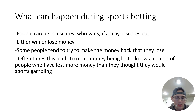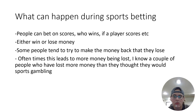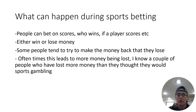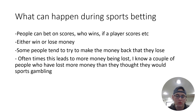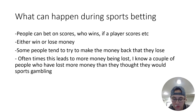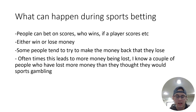So what can happen during sports betting? People can bet on scores, who wins, who loses, if a player scores. If you're watching baseball, you can bet on if somebody's going to hit a home run. If it's hockey, you can bet on who scores and how many goals are going to be scored in a game. There's a variety of things that can happen.